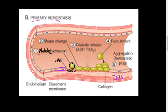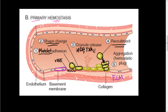When the platelets attach to this von Willebrand factor, they actually undergo a shape change and become more flat, more disc-like, to increase the surface area. Once they're attached, they start releasing particles into the bloodstream — ADP and TXA2. These particles cause recruitment, causing more platelets to come and stack up, forming a plug called a hemostatic plug.